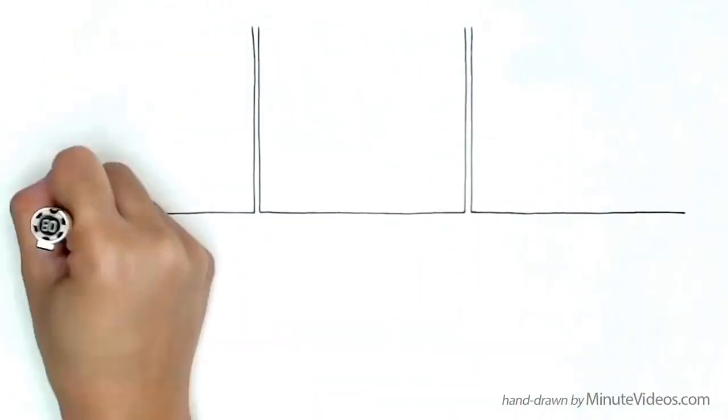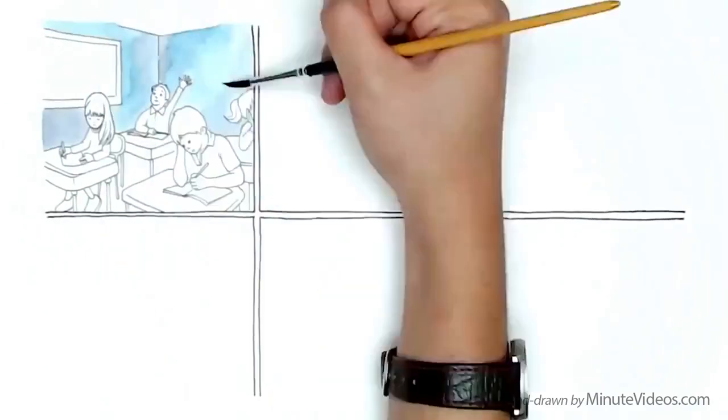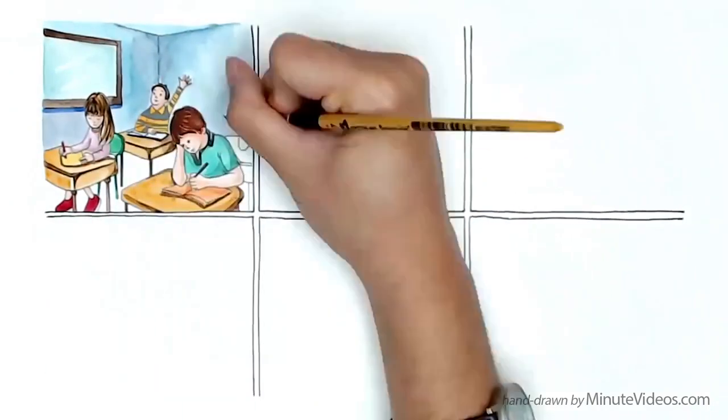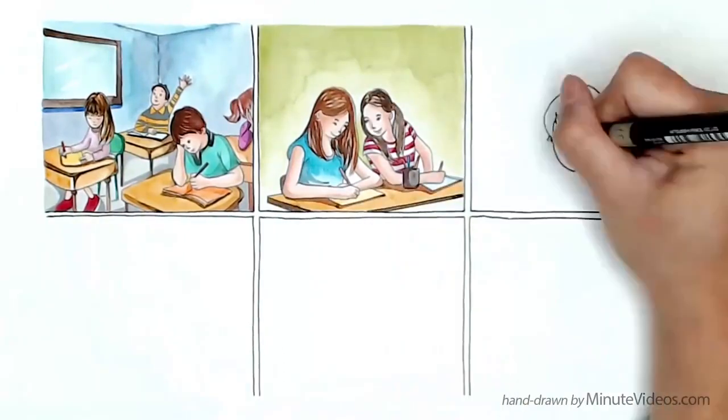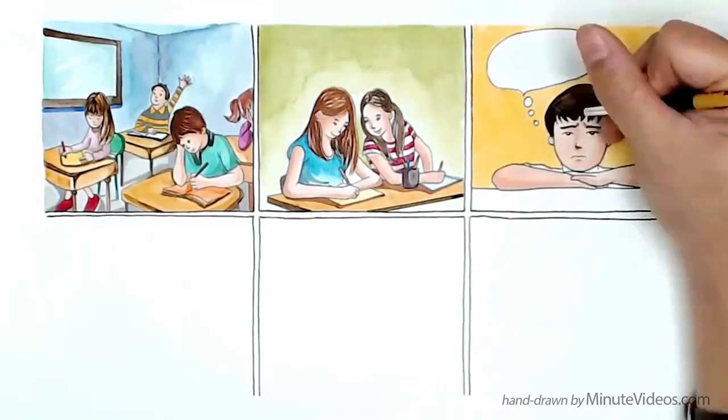Here are some signs to spot eye problems. A student asks to change seats from back to front. They look into their peer's notebook instead of the board. They squint their eyes to focus on objects in the distance.